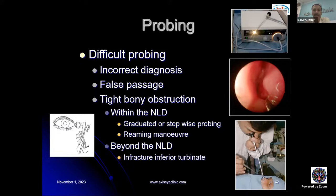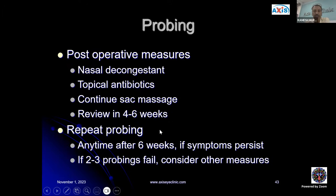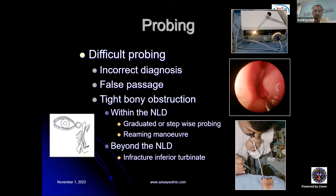Difficult probing may occur due to incorrect diagnosis (e.g., canalicular or common canalicular block), false passage through soft tissues, or tight bony obstruction. For bony obstruction within the nasolacrimal duct, graduated probing — starting with smaller probes and increasing size — can be done. The reaming maneuver passes the probe in a clockwise direction like a screw. If the block is beyond the duct, infracture of the inferior turbinate moves it toward the middle of the nose, opening the nasal cavity. All this should ideally be done under endoscopic guidance.